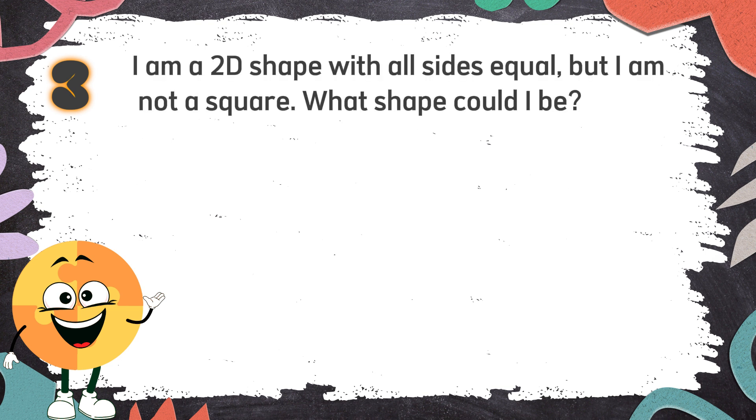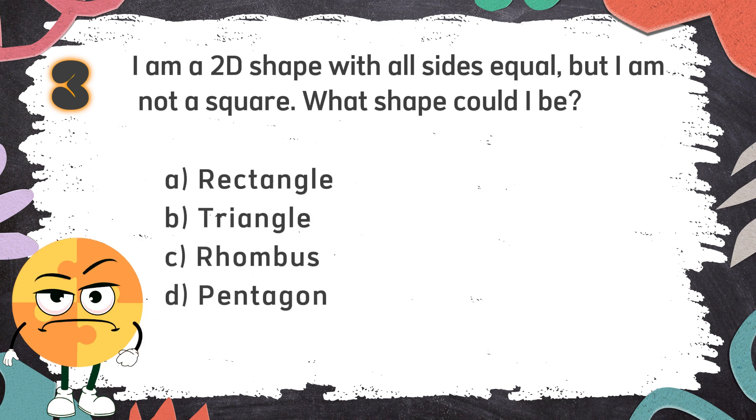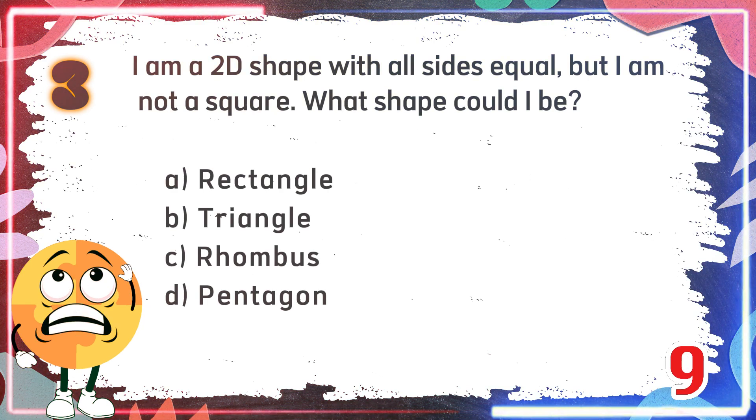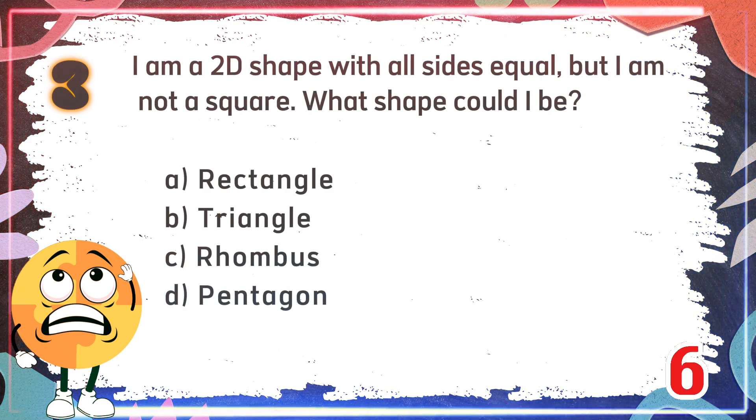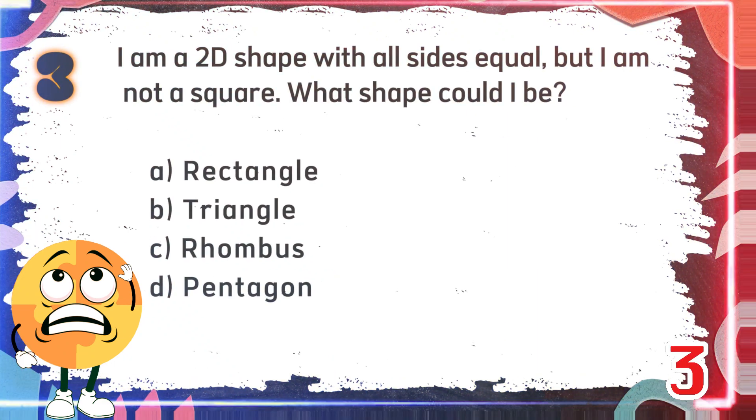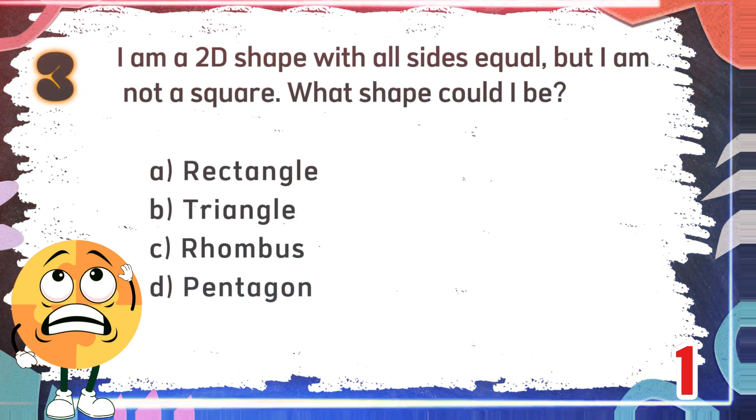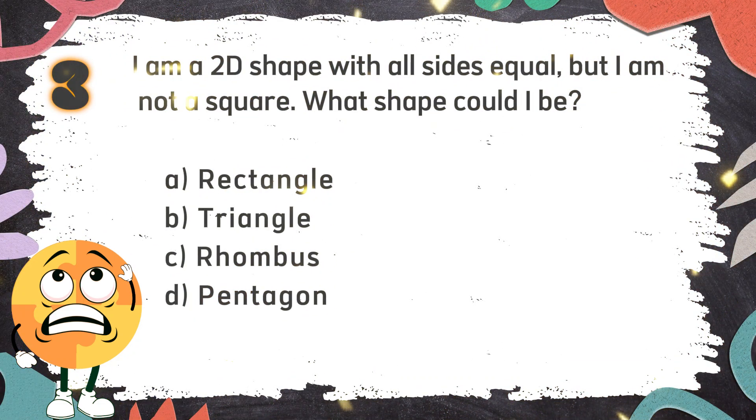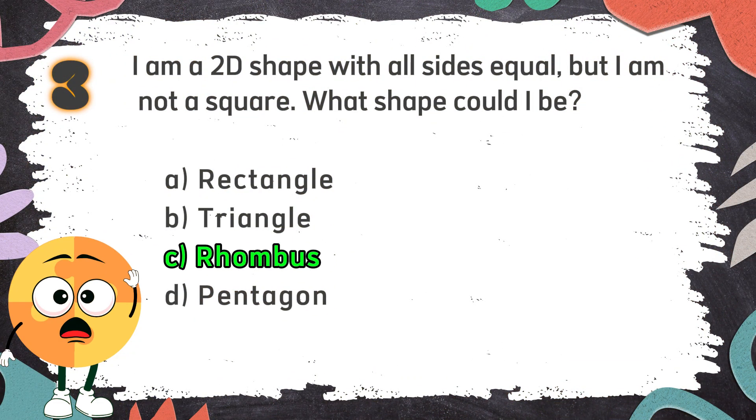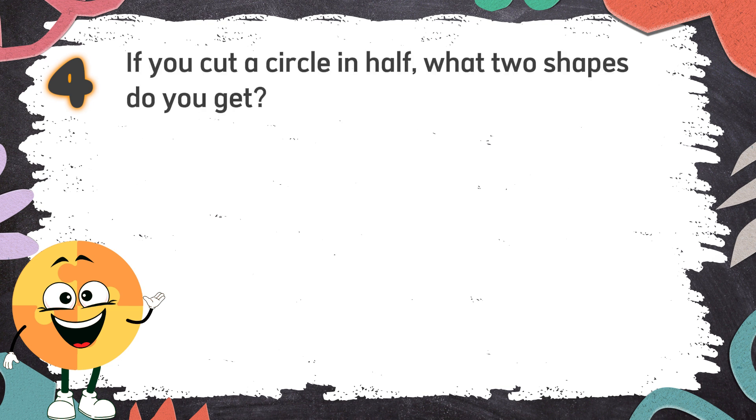The correct answer is B. A butterfly. Number 3: I am a 2D shape with all sides equal, but I am not a square. What shape could I be? The choices are A. Rectangle, B. Triangle, C. Rhombus, D. Pentagon.